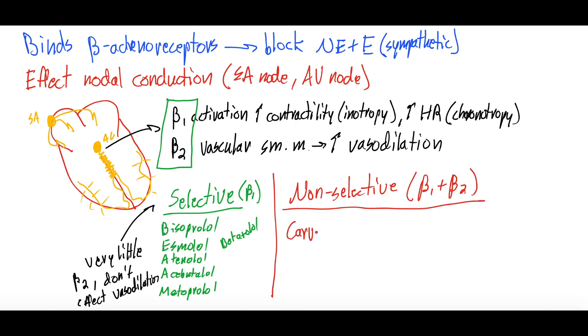There's going to be things like carvedilol, labetalol, nadolol, propranolol. I'll just list out a few more: sotalol, timolol. So these are non-selective. And what that means is that they can also lead to mild vasodilation.